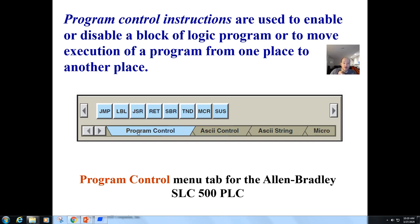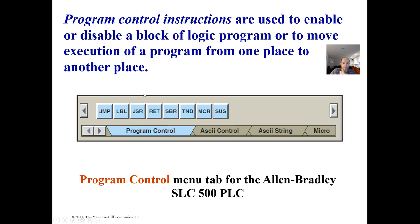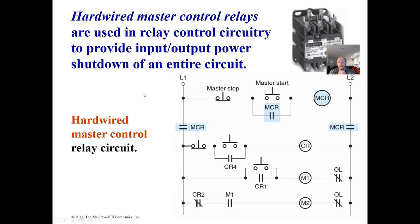You will notice that these are all located in the program control bin. You have to use this arrow here to navigate over to that — it's not just available right there — and you'll see that when we do this in Logic Pro. In the hardwired circuit, the only comparable thing in the motor control circuit is what we would call a master control relay.